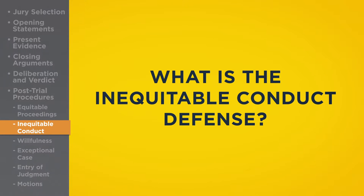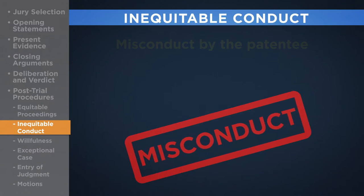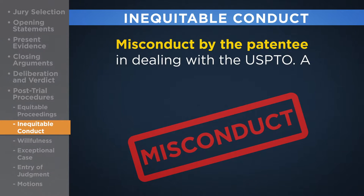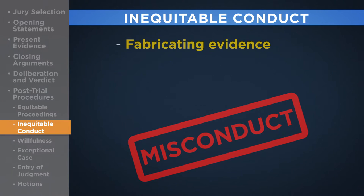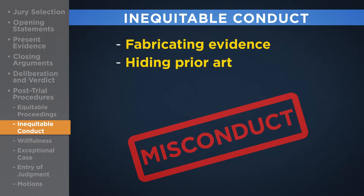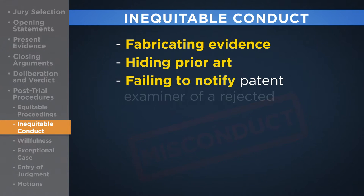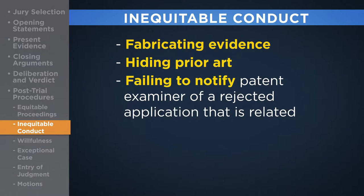What is the inequitable conduct defense? Inequitable conduct is misconduct by the patentee in dealing with the Patent and Trademark Office, through which the patentee or its attorney deceives or misleads the examiner. A defendant can raise this issue as a defense. If proven, this renders the patent unenforceable. Examples of inequitable conduct include fabricating alleged evidence of unexpected results in the development of the invention, hiding relevant prior art showing existing solutions to the problems solved by the patent, and failing to tell the patent examiner that a related application has already been rejected.